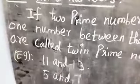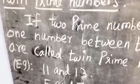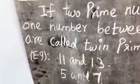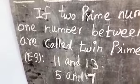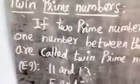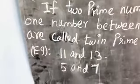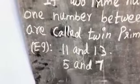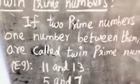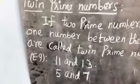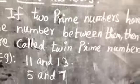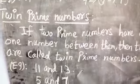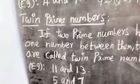Example: 11 and 13. Both are prime numbers, and between them only one number — 12 — comes. So 11 and 13 are twin prime numbers. Then 5 and 7: only 6 comes between them, so 5 and 7 are twin prime numbers. Also 3 and 5: only 4 comes between them, so 3 and 5 are twin prime numbers.